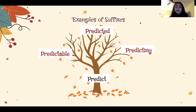Ed is added to the end of the word to indicate past tense. Adding ed to predict creates the word predicted, which means someone made a prediction in the past. For example, Sarah predicted that the Wizards would win. Ing is added to the end of the word to indicate present tense. Adding ing to predict creates the word predicting, which means that someone is currently making a prediction. For example, I am predicting a lot of traffic on the drive home.